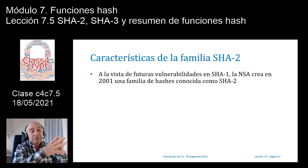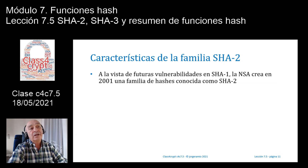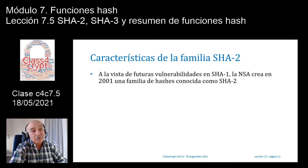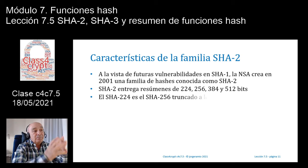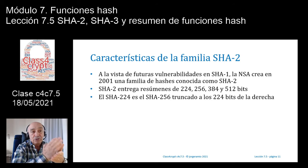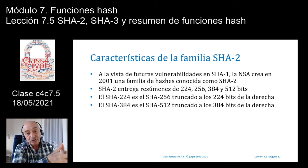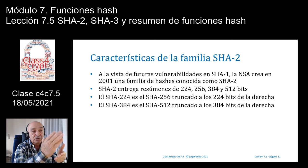¿Cuáles son las características de la familia SHA2? A partir de los problemas que tuvo MD5 —los ataques por paradoja del cumpleaños que bajaron su fortaleza y que también afectaron a SHA1— en febrero de 2017 SHA1 se vio afectado de forma bastante importante. La NSA crea ya en 2001 una familia de hashes conocida como SHA2. SHA224 es el mismo SHA256 truncado a 224 bits a la derecha; SHA384 es exactamente el SHA512 truncado a 384 bits a la derecha.